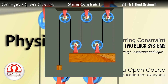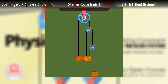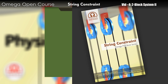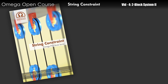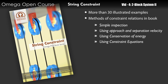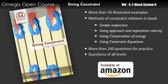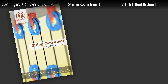String constraint cannot be learned properly unless you solve a large number of questions on it. Unfortunately, in the books available in the market, questions on string constraint or motion constraint are scarce and scattered. To resolve this problem, we have prepared a mini-book which focuses entirely on string constraint and motion constraint. It explains the concept using several illustrated examples and covers different methods to write constraint relations — like by inspection, through the concept of approach and separation velocity, using conservation of energy, and by writing constraint equations. It consists of about 200 questions ranging from very preliminary to pretty advanced ones, along with hints and solutions. You can buy this book from Amazon; the links are given in the description below. Subscribe to the channel and click on the bell icon to get notifications when we upload a new video.